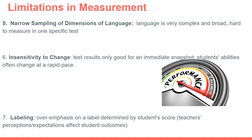A sixth reason for limitation in measurement is insensitivity to change. Test results are really only good for about a month or less — they are an instant snapshot of students' abilities. Most English language learners are learning at a rapid pace, so results from February might not be very accurate for how students are progressing in April. Yet when people see these high-stakes summative assessments, they assume that students are still at that level even though they've probably progressed beyond it.